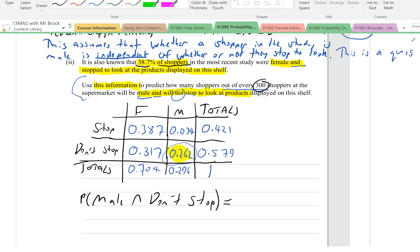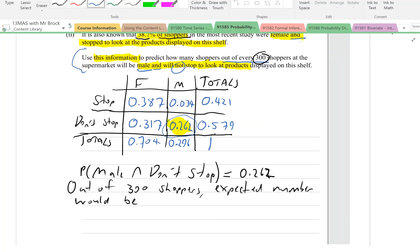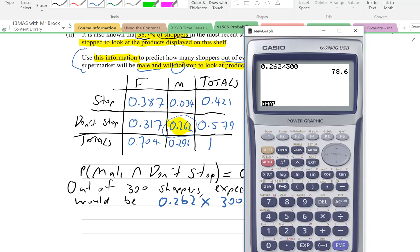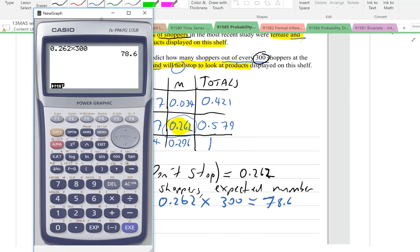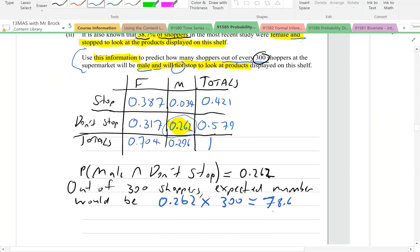That's going to be 0.262 or 26.2%. And that's out of 300 shoppers. So probability male and don't stop is 0.262. So we go 0.262 times 300, and that equals 78.6.